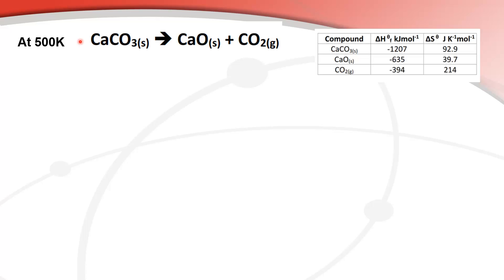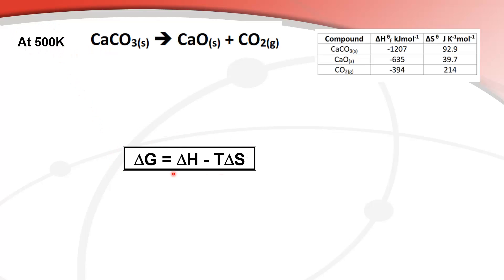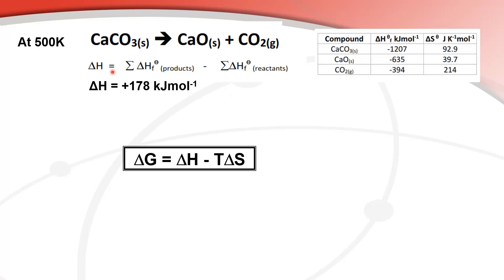In the next example, we calculate the change in Gibbs free energy for calcium carbonate decomposing into calcium oxide and carbon dioxide gas at 500 K. We need to use the equation delta G = ΔH − TΔS because we are not dealing with standard conditions. Using enthalpy of formation values from the data table, the change in enthalpy for this reaction is positive 178 kJ/mol, showing it's an endothermic reaction.